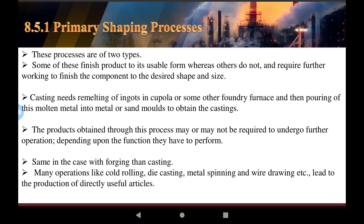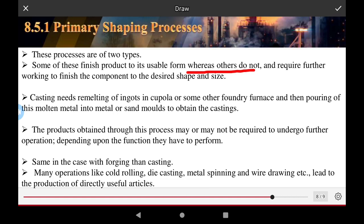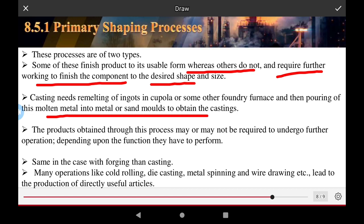The primary shaping process is the primary process of manufacturing. Some finished products may be suitable for various uses and do not require further working. For finished components derived from casting, re-melting is needed in a cupola or foundry furnace, and then the molten metal is poured into a sand mold to obtain a casting. The products through this process may be required to undergo further operations.